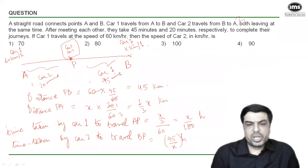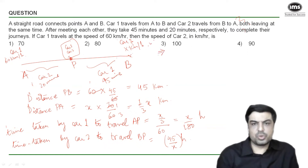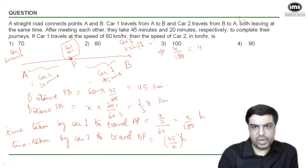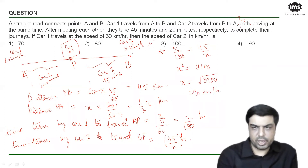Since the two cars started simultaneously, when they meet they have traveled for the same time. So x/180 = 45/x. Cross-multiplying gives x² = 8100, therefore x = √8100 = 90 km/h.